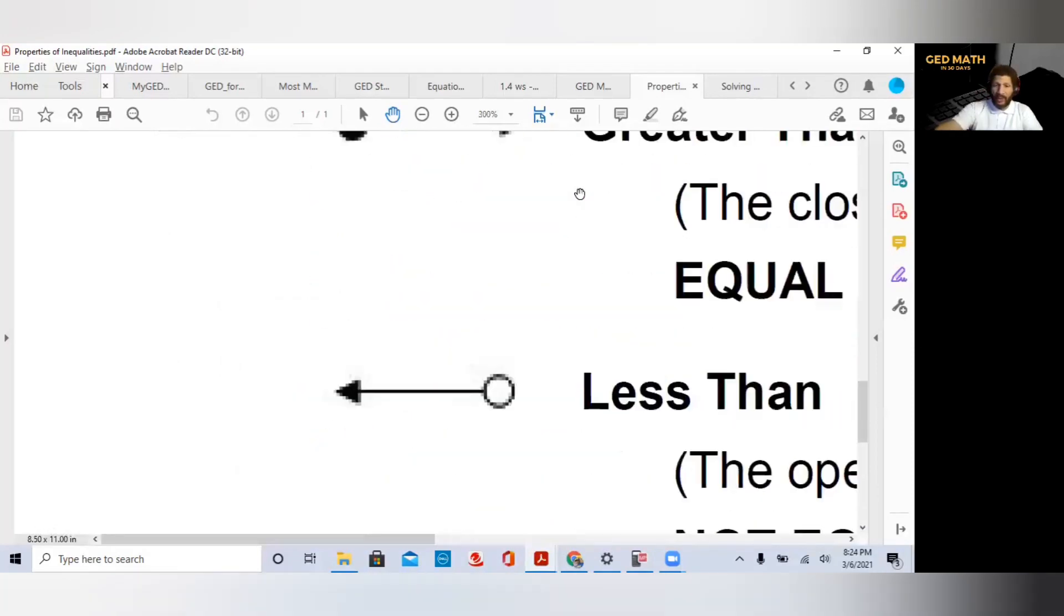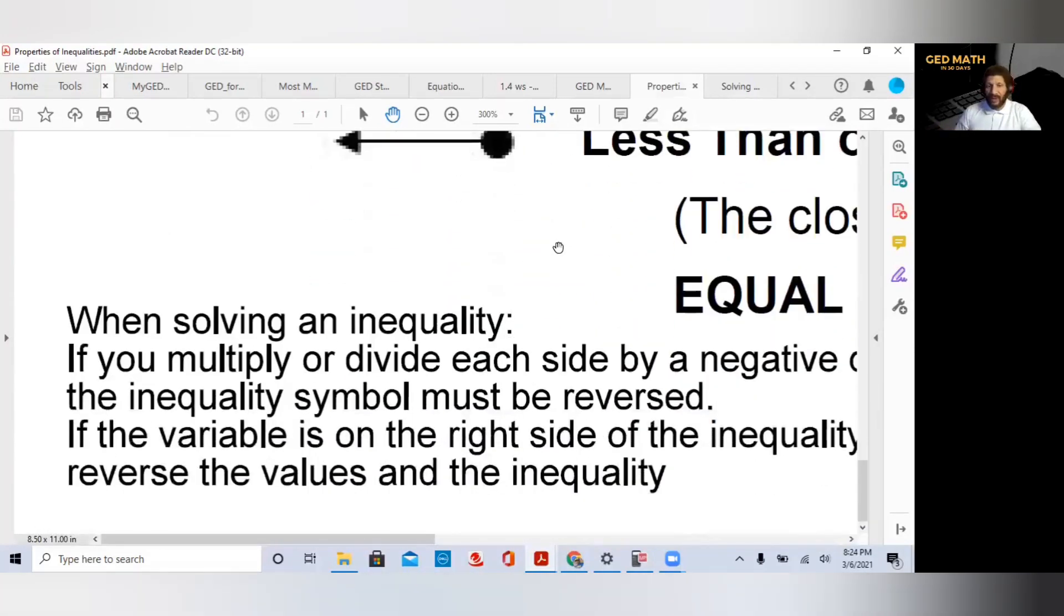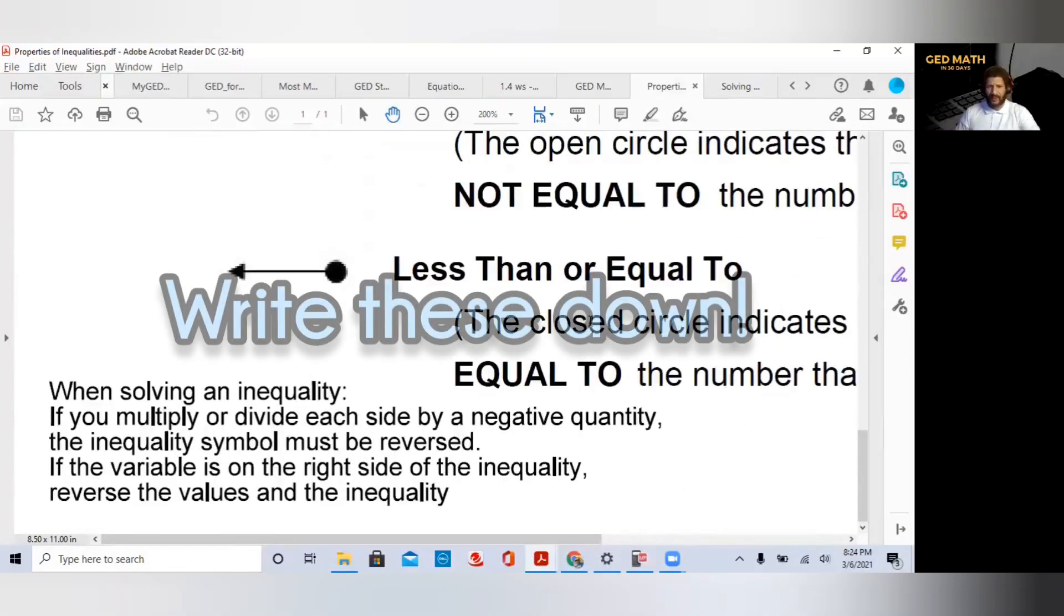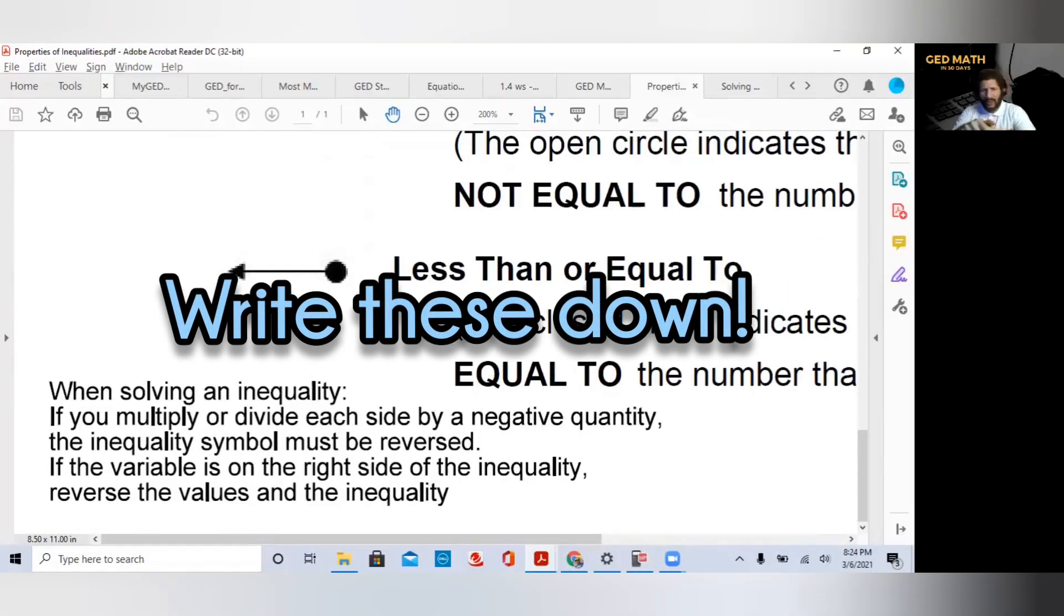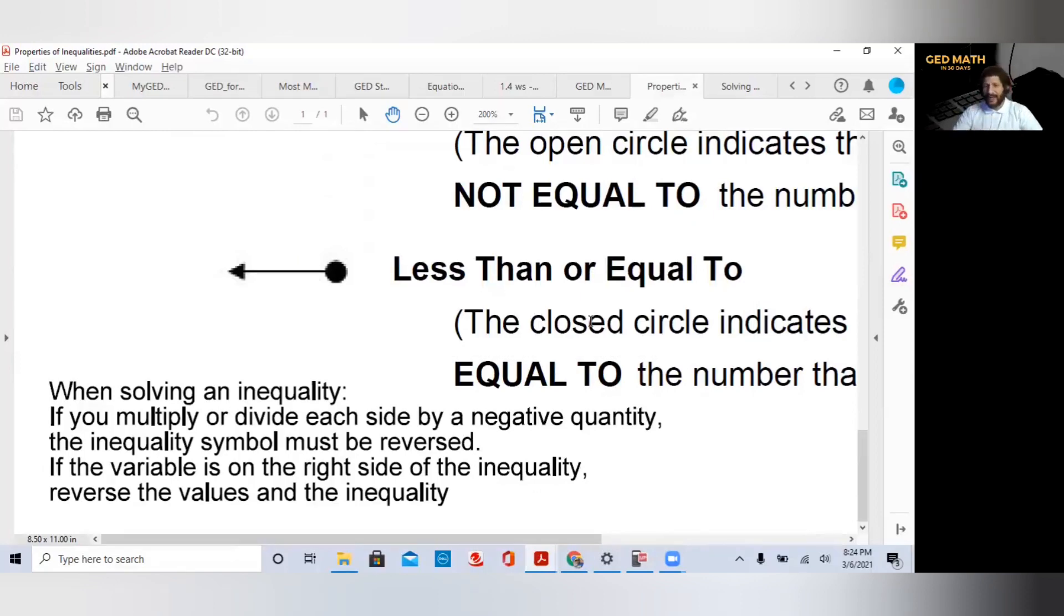There's two very important things you need to know. Very, very important. When solving an inequality, if you multiply or divide each side by a negative quantity, the inequality symbol must be reversed. This is why most people get inequalities incorrect on the GED exam. If the variable is on the right side of the inequality, you must reverse the values and the inequality.